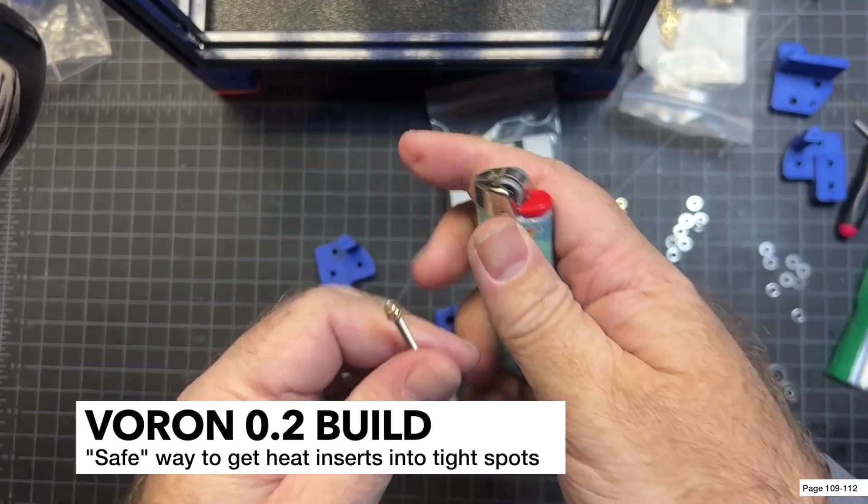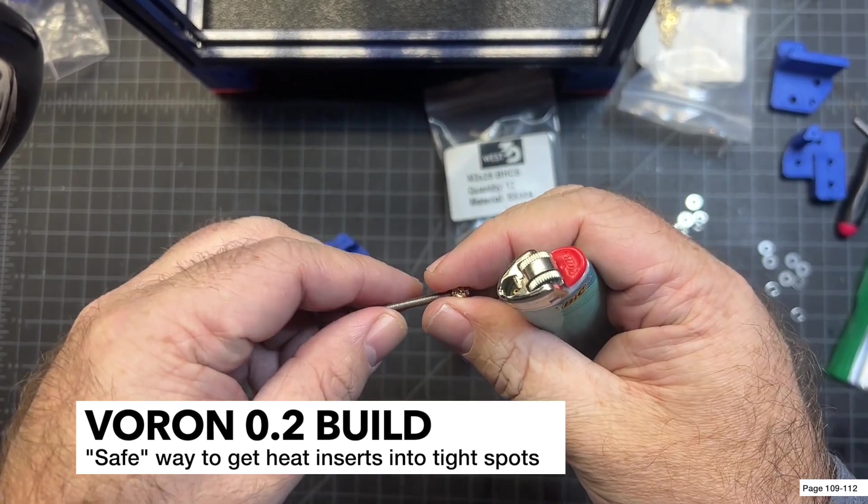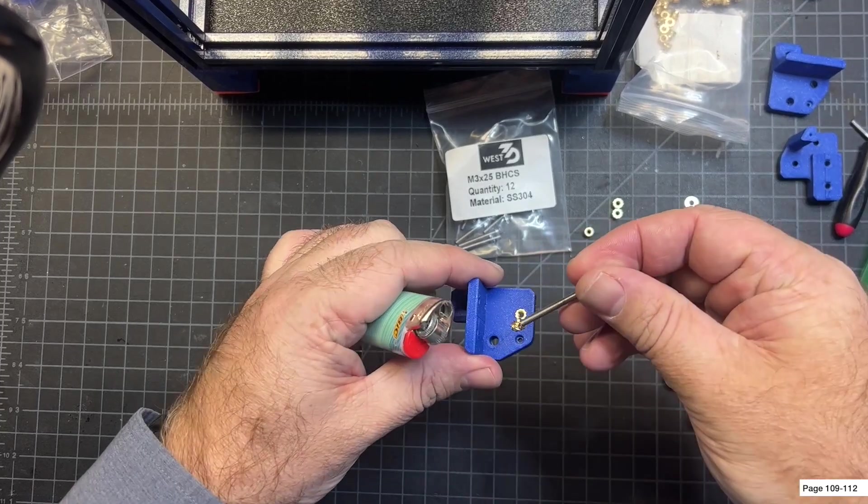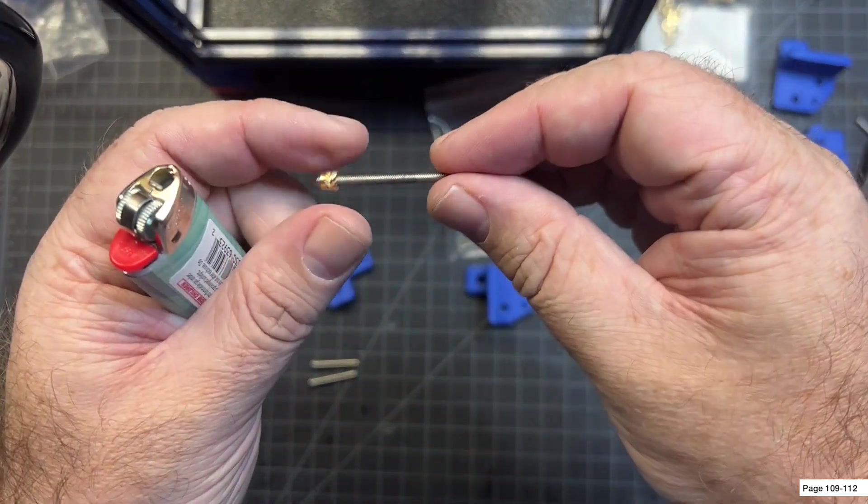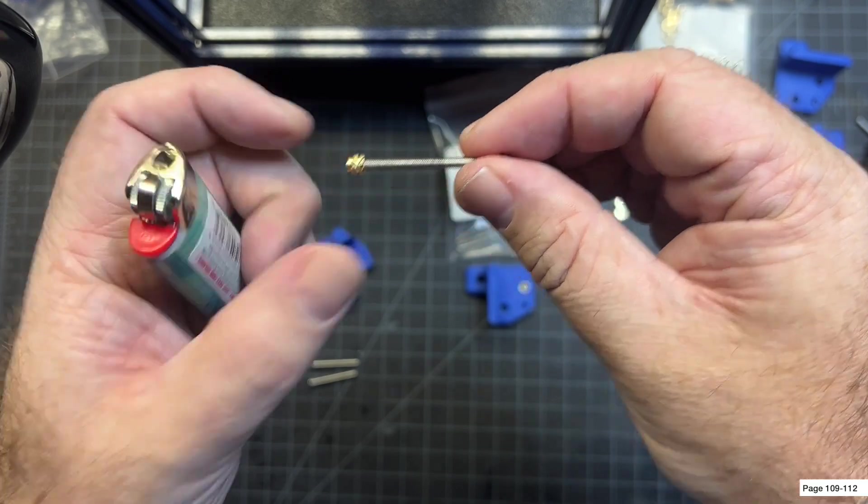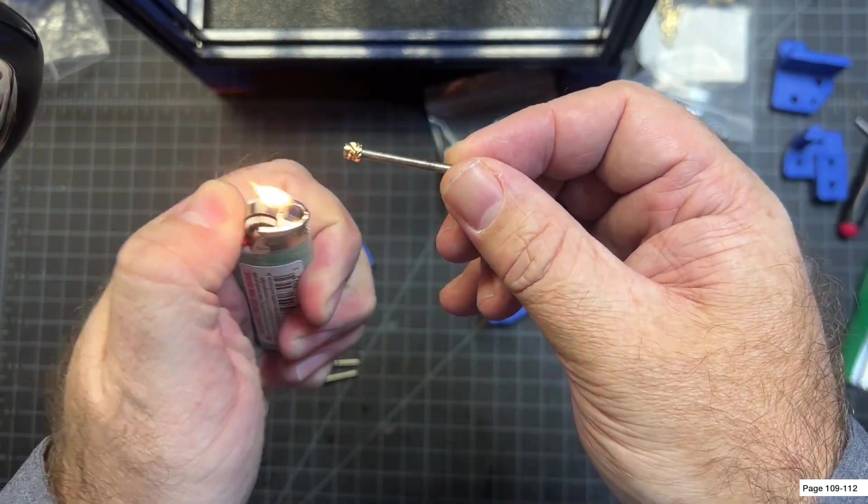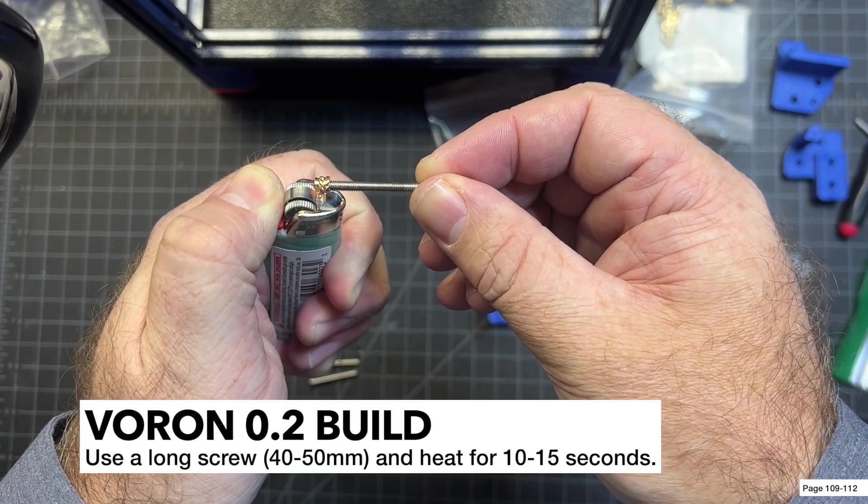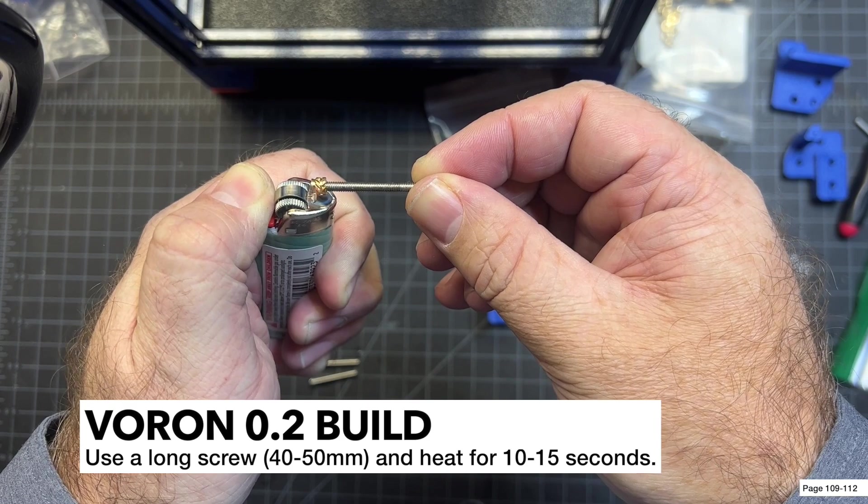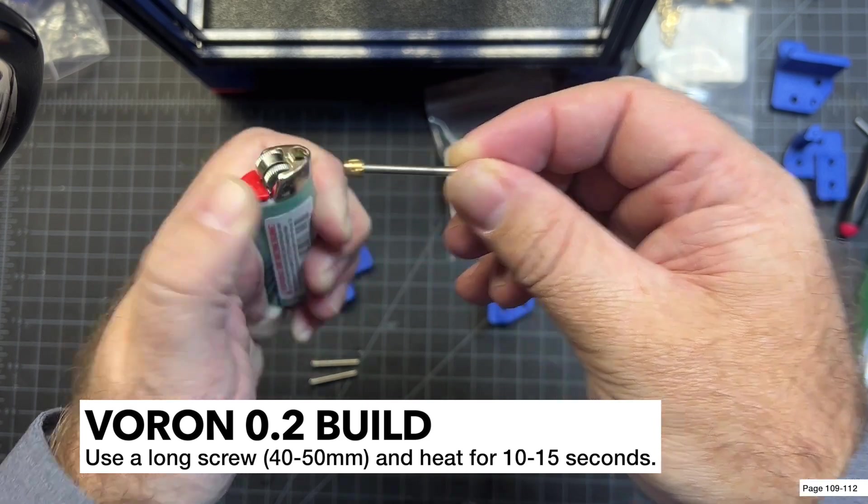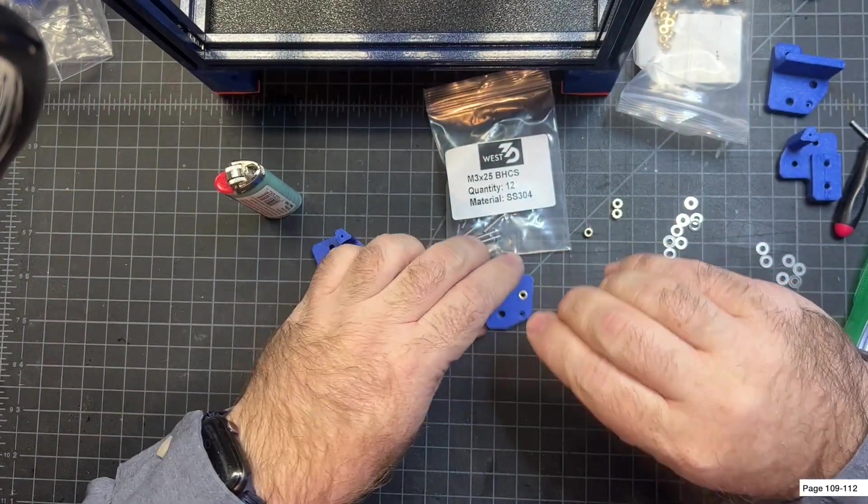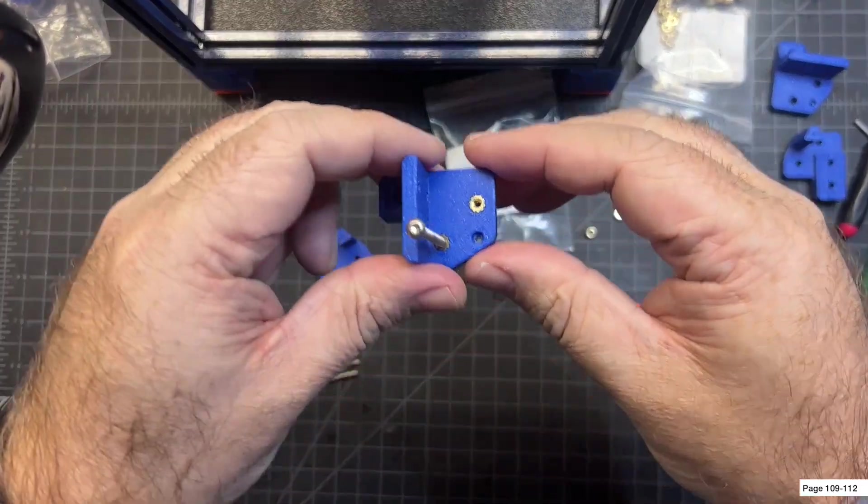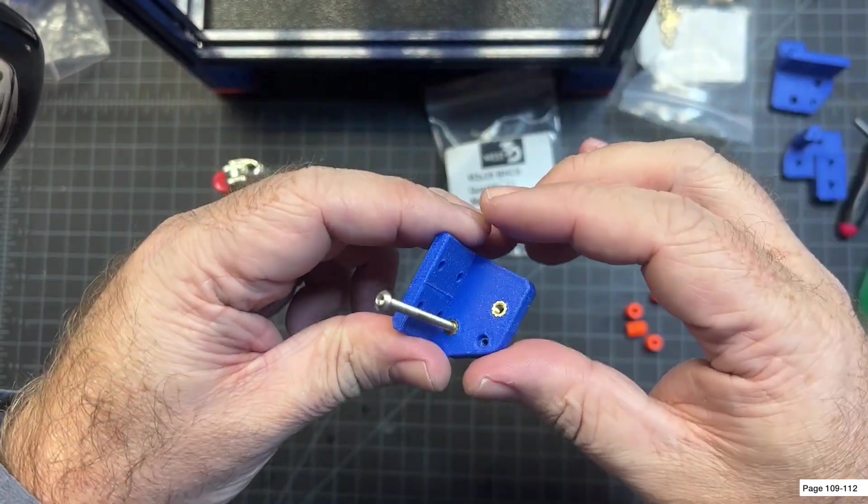If you have a lighter or a heat gun, this is a good alternate way to do it, and especially for these tight fits I prefer to do something like this. So basically you're going to put the heat insert on the end of a screw and then you're just going to get it nice and hot. Just hold it for maybe 10-15 seconds, and once you start feeling a little bit of heat in the screw you should be able to put it in. It'll get the job done. Plus you can confirm that you're nice and straight on the screw.